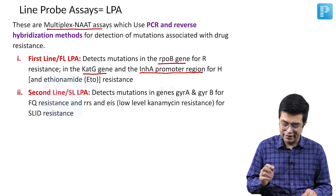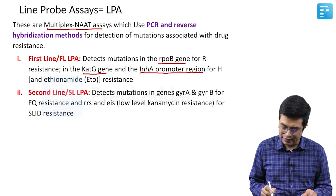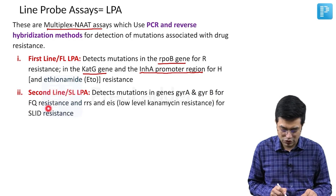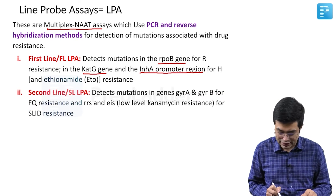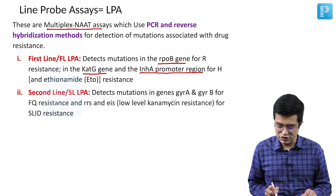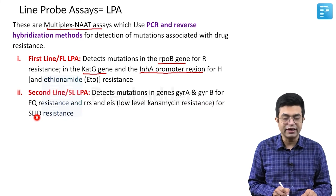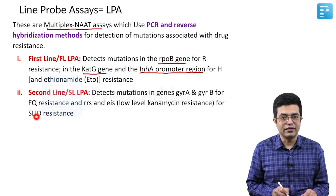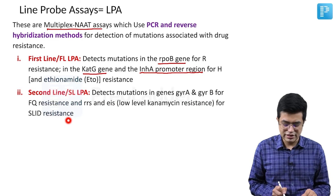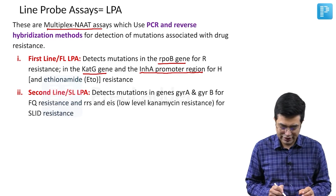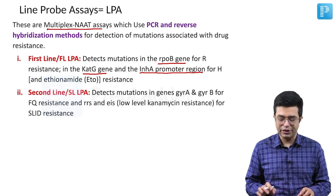Then we have second-line LPA, which will detect mutations in the genes gyrA and gyrB for fluoroquinolone resistance, and rrs and eis, which are involved in low-level aminoglycoside resistance, for second-line drug resistance in tuberculosis. These are the first-line and second-line LPAs.